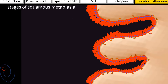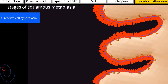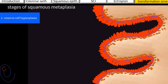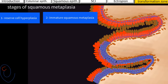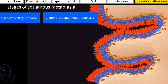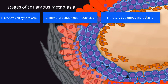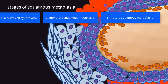Squamous metaplasia has three stages. Stage one is called reserve cell hyperplasia, when reserve cells under the columnar epithelium start to divide. Stage two occurs when reserve cells proliferate to form multiple layers of immature undifferentiated parabasal cells, while a layer of columnar epithelium can often still be seen on the surface — this stage is called immature squamous metaplasia. The last stage is mature squamous metaplasia, where immature cells differentiate into mature squamous epithelium which nearly cannot be differentiated from the original squamous epithelium.